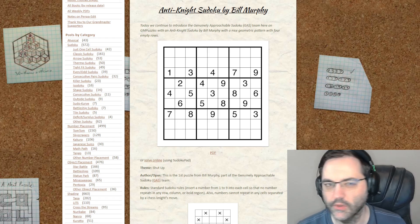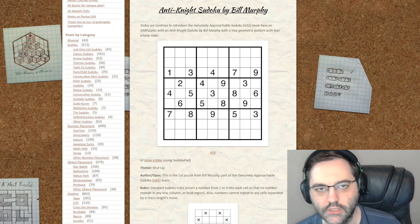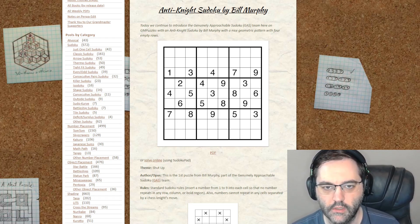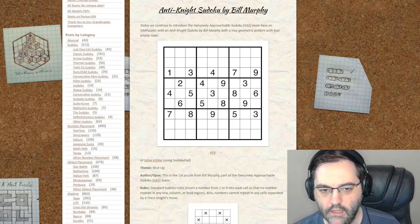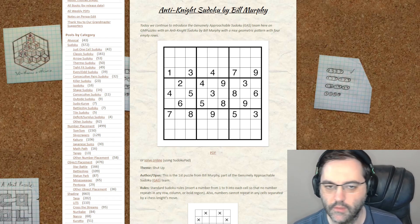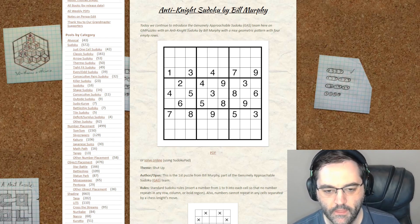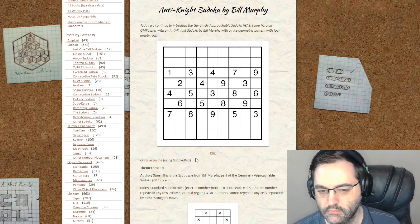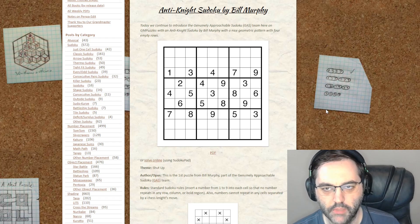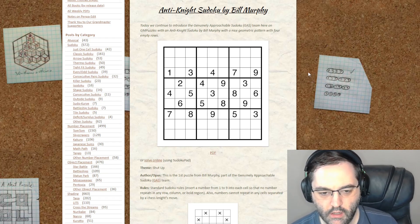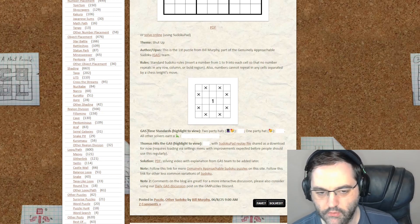So as promised, here's a look at the GM Puzzles blog. This is the puzzle that we just solved, the anti-knight Sudoku by Bill Murphy. They provide an image of the puzzle typeset in their own software, so some of these may look a little different. They also provide a PDF if you want to print out the puzzle and solve on paper. Still the link to solve on SudokuPath. It will also include the usual time standards, party hats, and dinosaur.